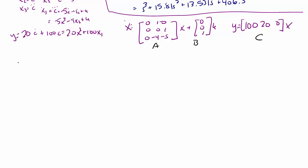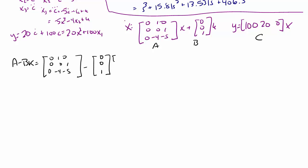A minus BK equals the matrix [0, 1, 0; 0, 0, 1; 0, negative 4, negative 5] minus [0; 0; 1] times [K1, K2, K3]. Since we have three states there will be three gains. This yields [0, 1, 0; 0, 0, 1; negative K1, negative 4 minus K2, negative 5 minus K3].